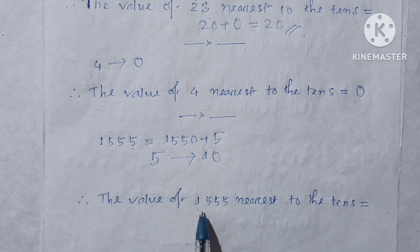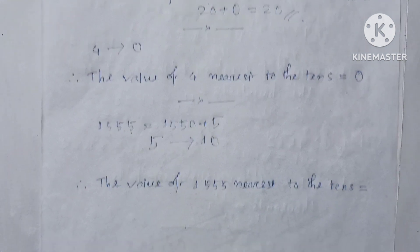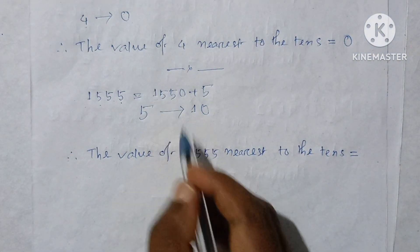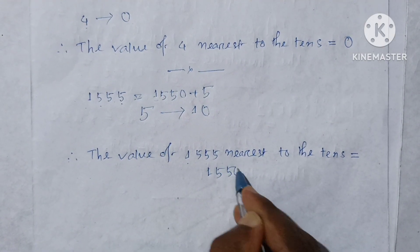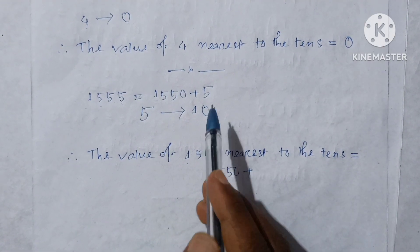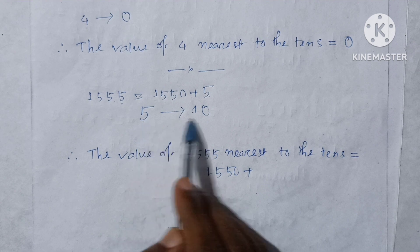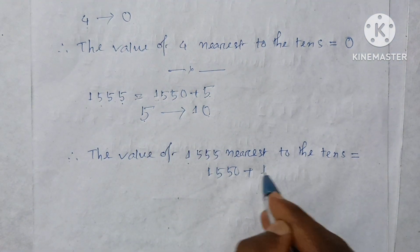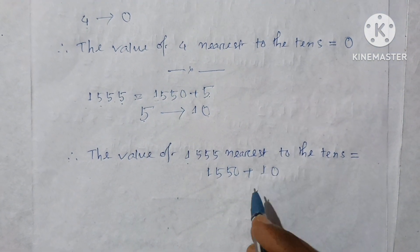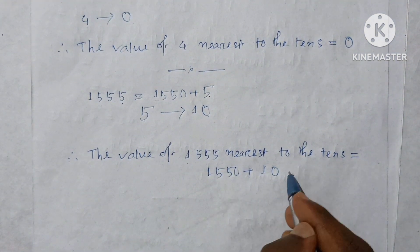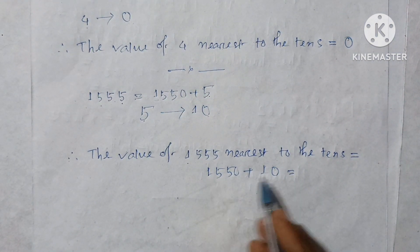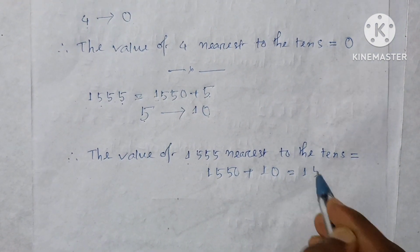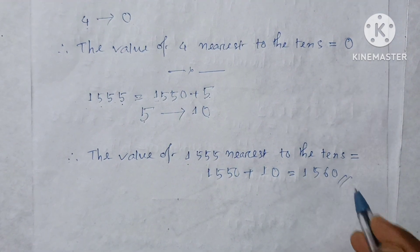The value of one thousand five hundred fifty-five nearest to the ten: write 1550, and in place of the 5 we write 10. So the answer is one thousand five hundred sixty.